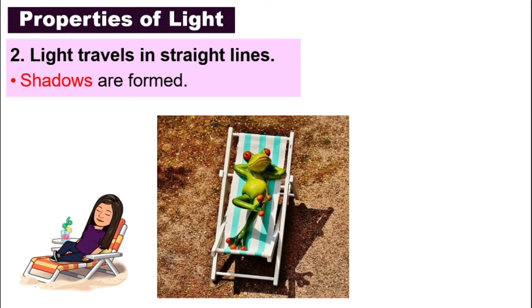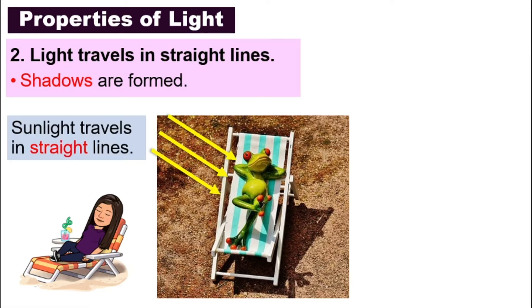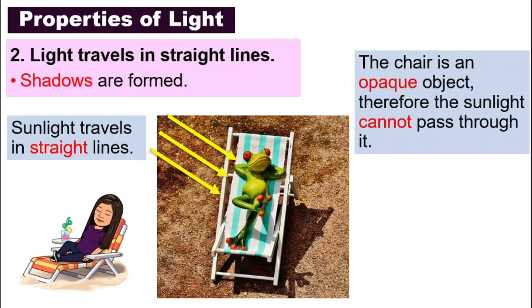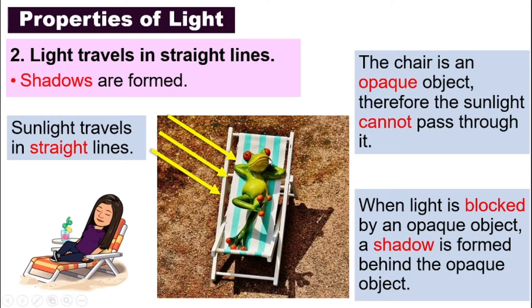Because light travels in straight lines, that is why shadows are formed. Here is a very cute relaxing frog on a chair by the beach — look underneath the chair, there is a shadow in the shape of the chair. Sunlight travels in a straight line towards the chair and the frog. The chair is an opaque object, meaning it does not allow sunlight to pass through. So this opaque object blocks the light, and because light cannot travel around corners or avoid the chair, it only travels in straight lines. The opaque object blocks them.